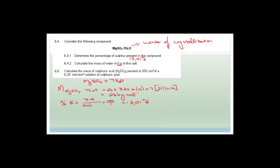Now it asks us to calculate the mass of the water in 5 grams of the salt. The molar mass of the whole salt is 246 grams per mole. We need to work out the number of moles because for every mole of the salt, we've got seven moles of water attached to it — a 1 to 7 ratio. So if we work out the moles of salt, we can find the moles of water and then the mass.